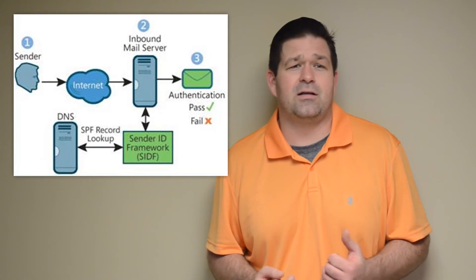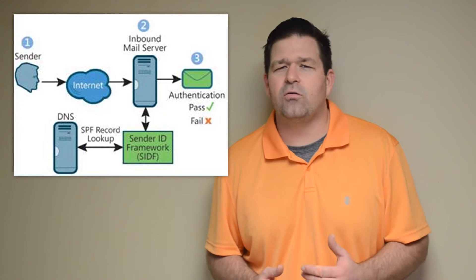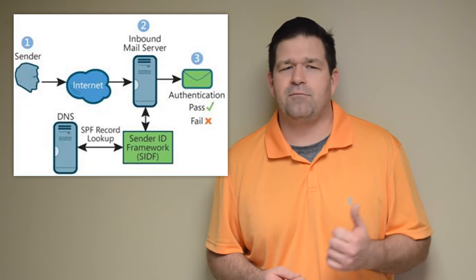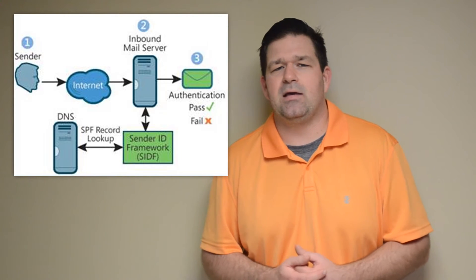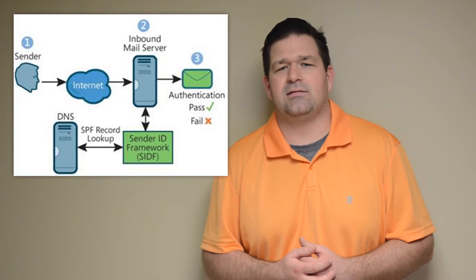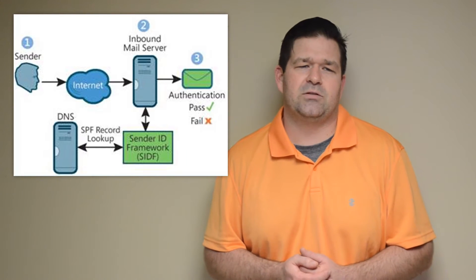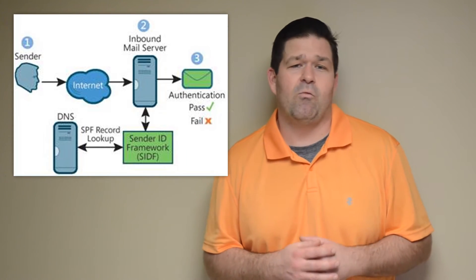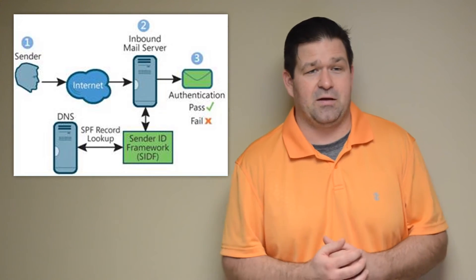SPF, or Sender Policy Framework, is the most basic form of sender authentication. It's widely adopted and is considered a cornerstone of every sender's identity and reputation. This is usually the first form of authentication a filter will check for, and it involves the email provider gathering the return path domain — also called the envelope domain — and then matching the IP tied to that domain against the published DNS record for SPF. If there's a match, you have a pass with the SPF check.